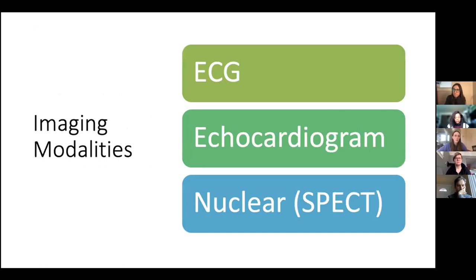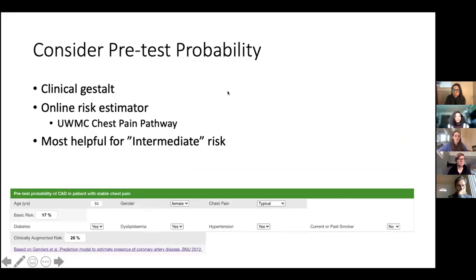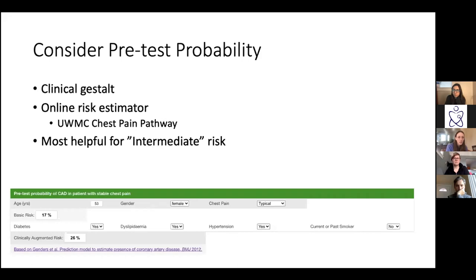Once you've decided how to stress your patient, the next big decision is how to image them. You're comparing a baseline image to an image after stress. The first thing to think about is your overall pretest probability that this person has coronary disease. We're reaching for cardiac stress testing for people in the intermediate risk group. A lot of times we use clinical gestalt, but you can use online tools like the risk escalator in our chest pain pathway, which takes into account gender, age, whether chest pain is typical or atypical, and comorbidities like diabetes and hypertension to estimate risk. If someone is super low risk, you probably shouldn't be stressing them at all.